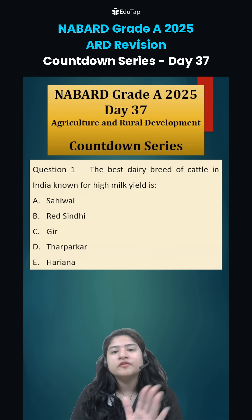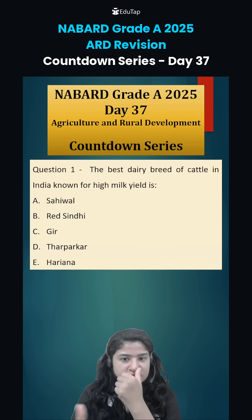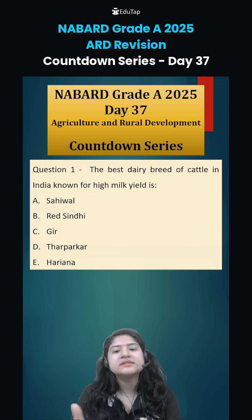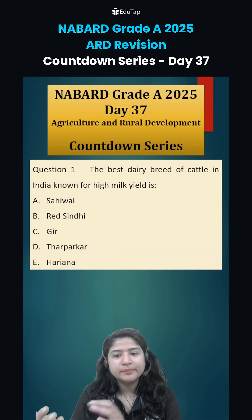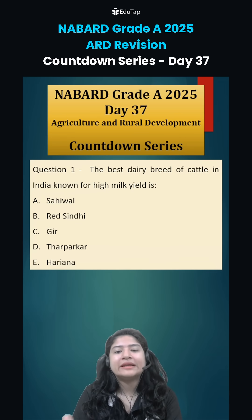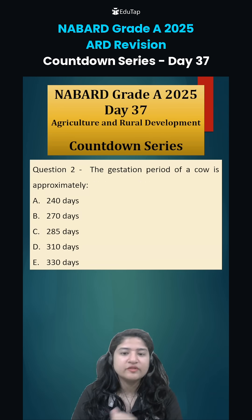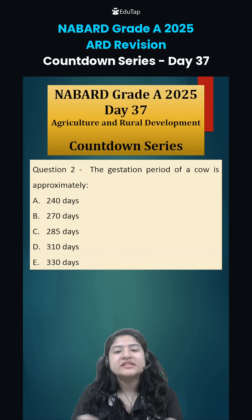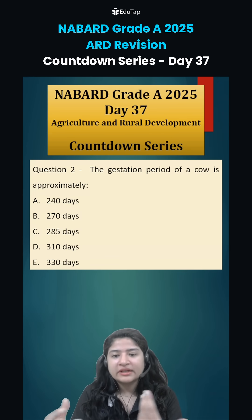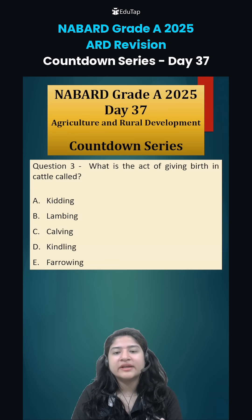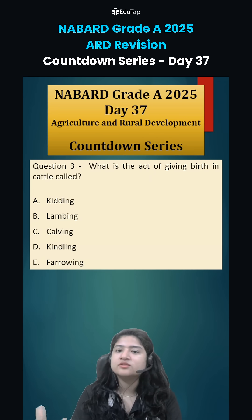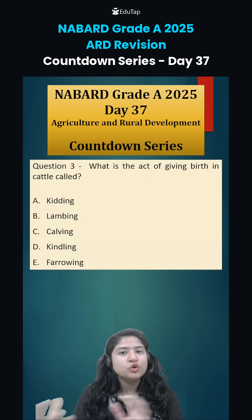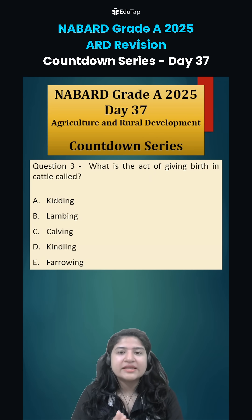Now for day 37, question number one: which is the best dairy breed of cattle in India known for high milk yield? Question two: the gestation period of a cow is approximately how much? And finally, what is the act of giving birth in cattle called? Comment down your answers and we will discuss them in the next class. Thank you.